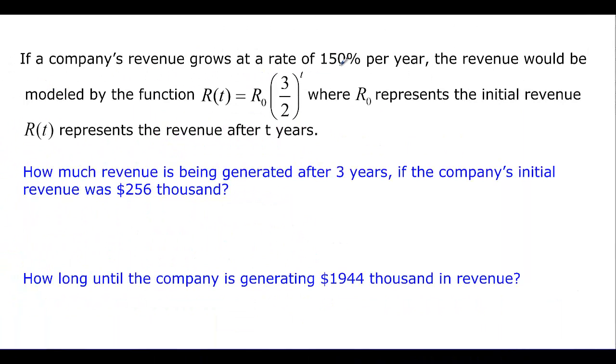All right, if a company's revenue grows at a rate of 150% per year, the revenue is given by this equation. 3 over 2 is 1.5, so 150% is right there. R0 is the initial revenue. R of T is after two years. So how much revenue is being generated after three years? So that's T.